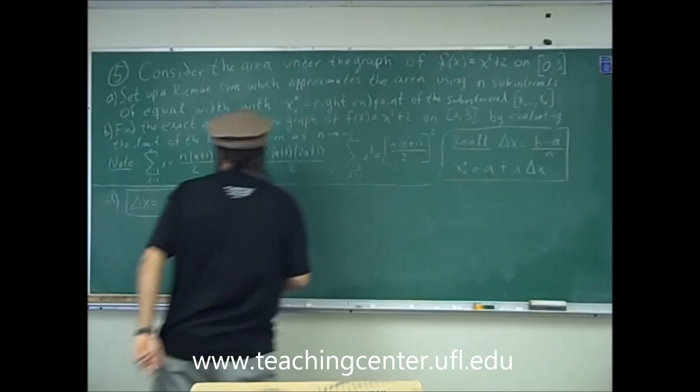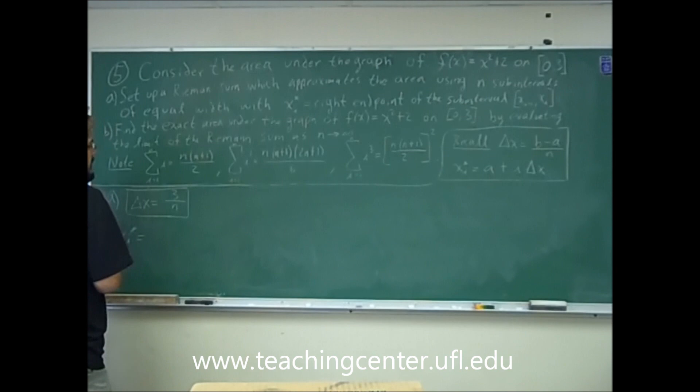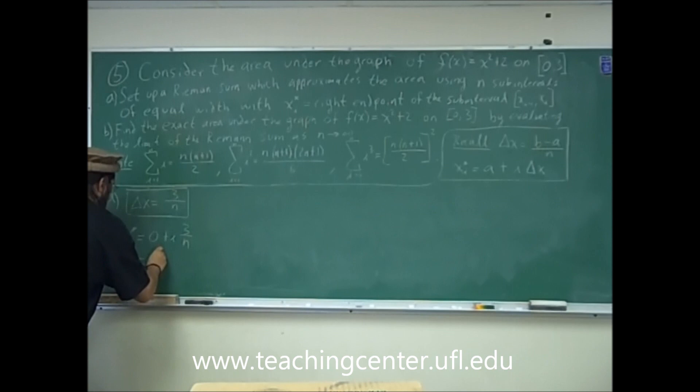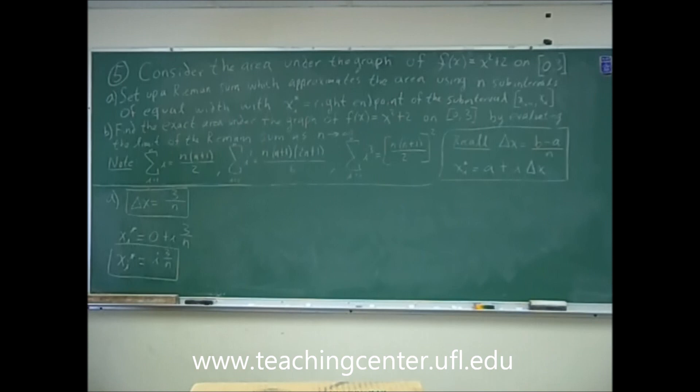Now we need to find x sub i star. x sub i star is equal to a plus i times delta x. But a is 0, so that's 0 plus i times delta x. Delta x we just found is 3 divided by n. So x sub i star equals i times 3 divided by n. These are all the x values of the right endpoints.